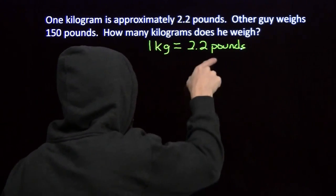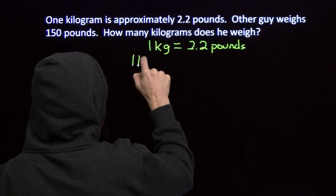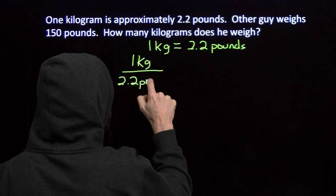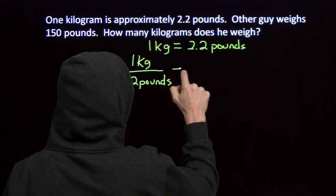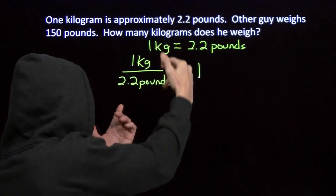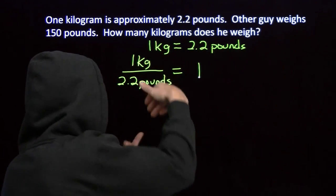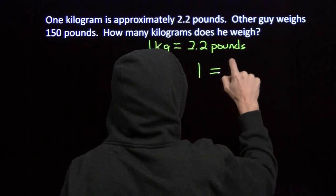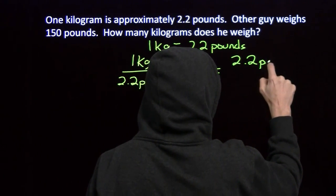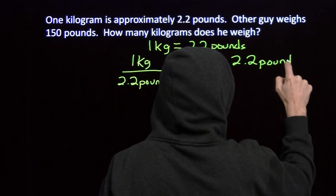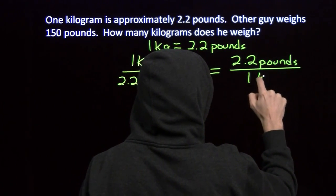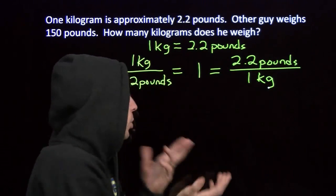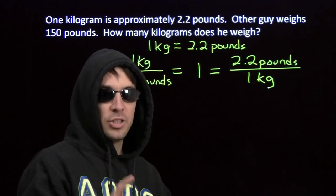We'll start with the fact that 1 kilogram equals 2.2 pounds. I can divide both sides by 2.2 pounds, and I get 1 kilogram over 2.2 pounds equals 1. These two are equal, so the ratio is 1. I could also divide by 1 kilogram, giving 2.2 pounds over 1 kilogram equals 1. We call both of these our conversion factors, and we use them to convert back and forth between pounds and kilograms.